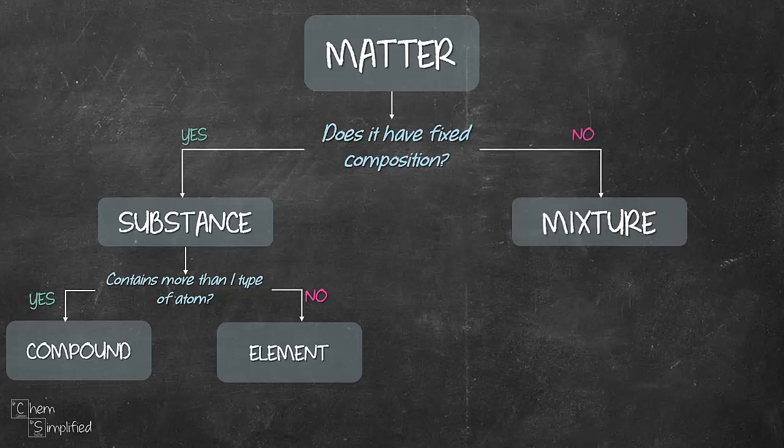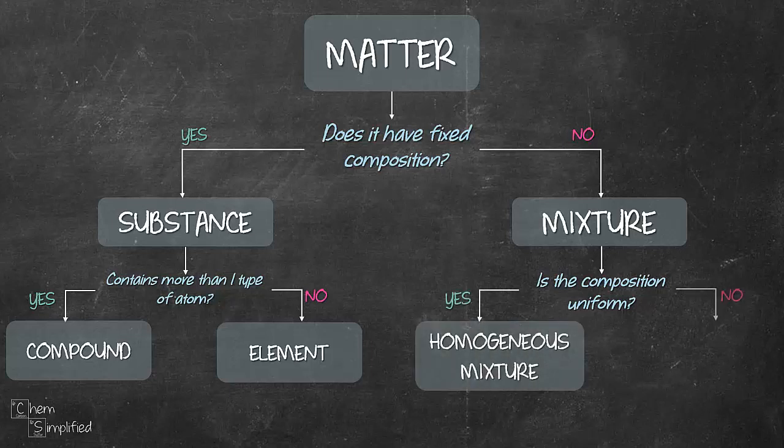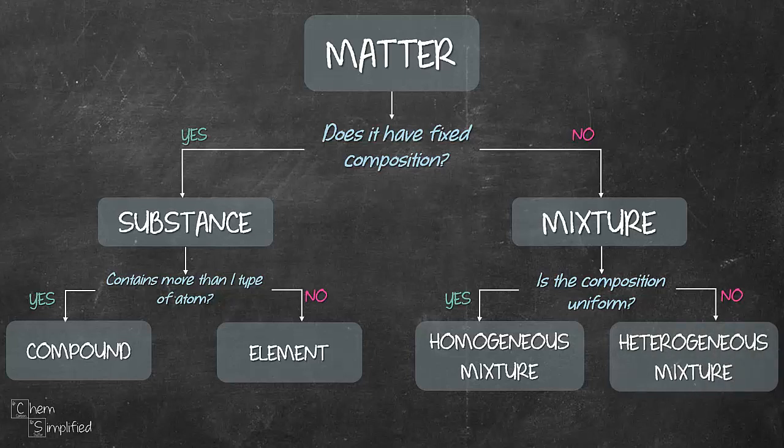And then to further classify our mixture, we ask whether the composition is uniform. That means the whole thing, is it mixed really well, where you cannot differentiate one substance from another? If yes, then it's a homogeneous mixture. If it's not mixed well, then it's a heterogeneous mixture. So let's start with our first example.